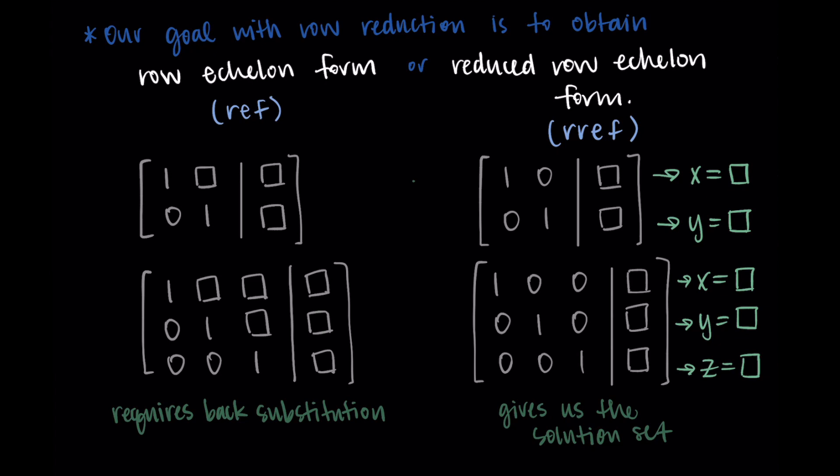So this is an introduction into row reduction, we have our three operations we're allowed. And these here are the row echelon form and the reduced row echelon form that we try to get to. In the next video, we'll work through some examples. But for now, thanks so much for watching, and I will talk to you in the next one.